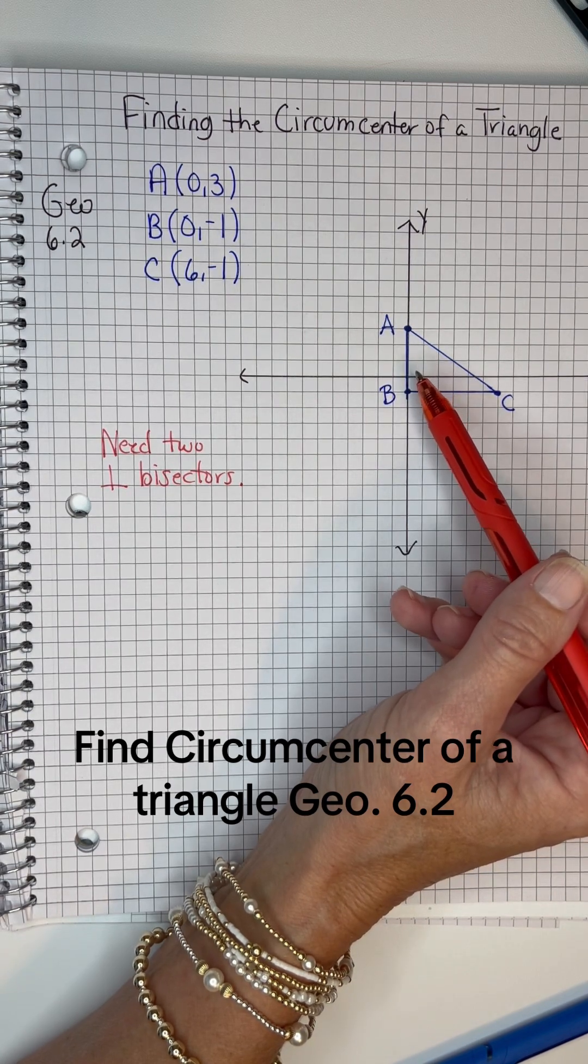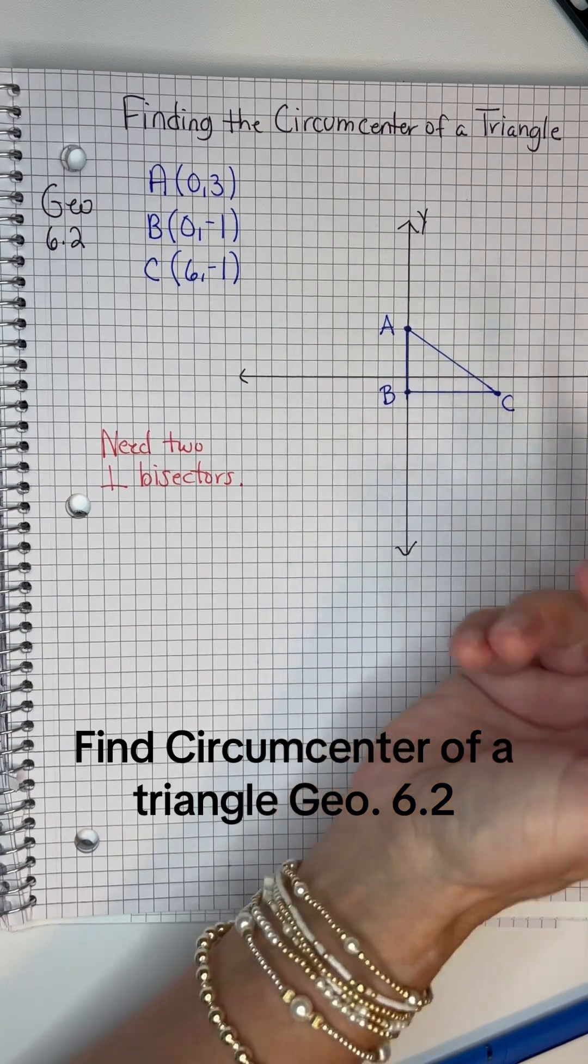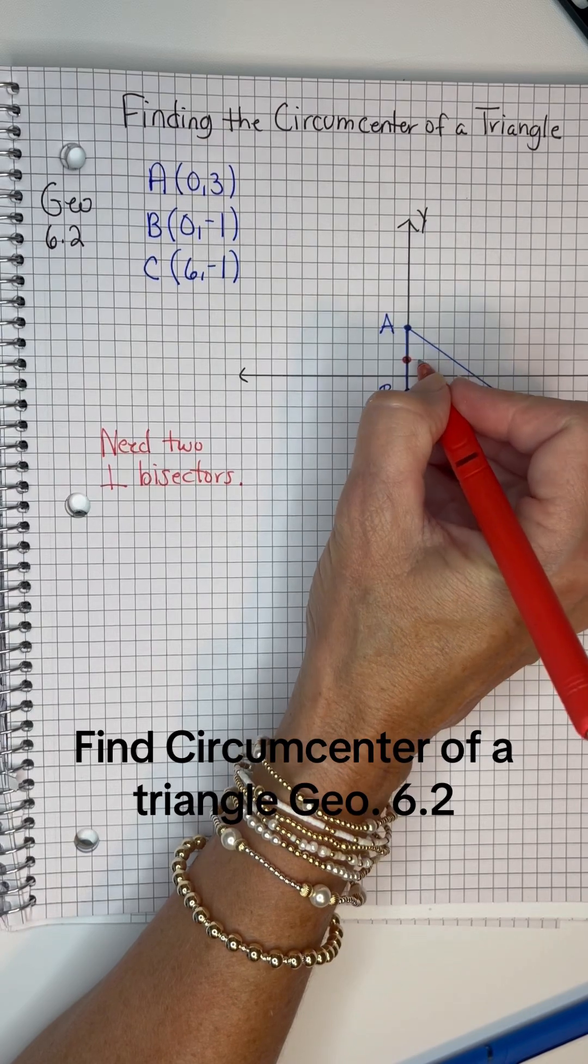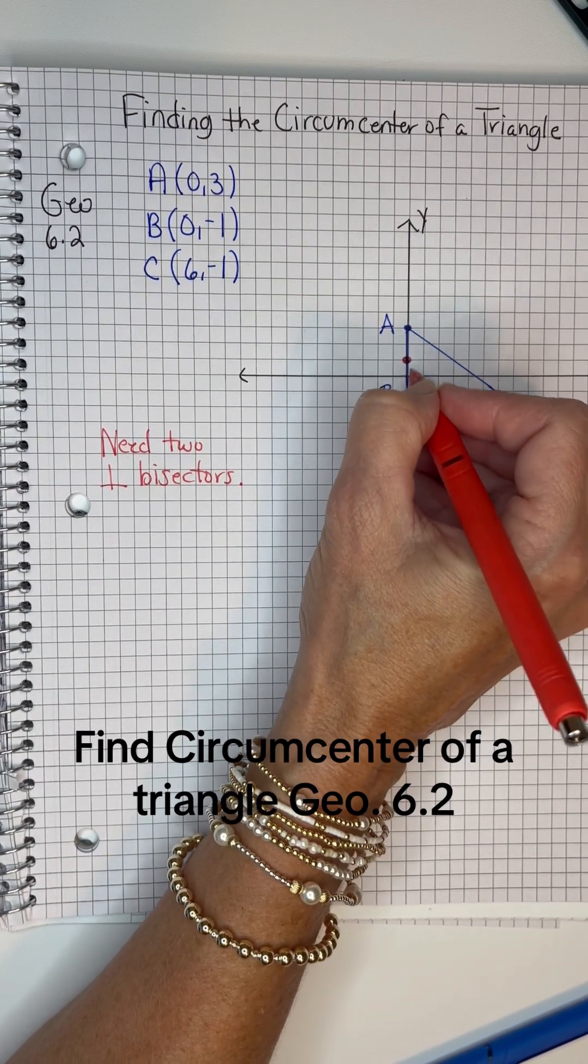So if it's a perpendicular bisector I need of AB, I need it to bisect AB, so that would be the middle. And notice there are two lines above it, two little blocks above it, two little blocks below it, so that would be bisected.